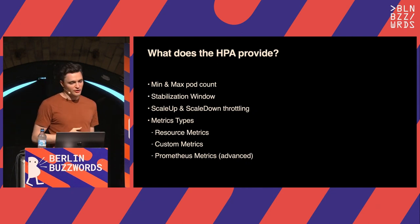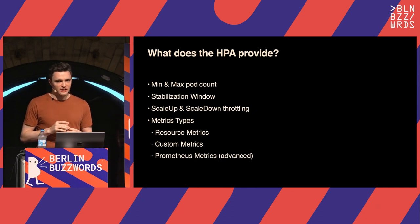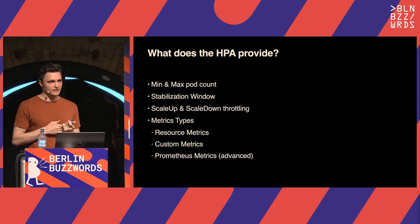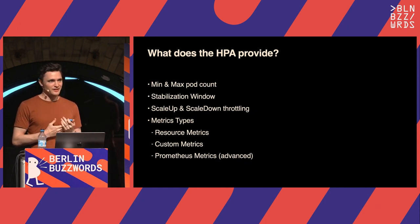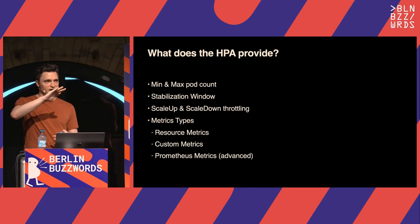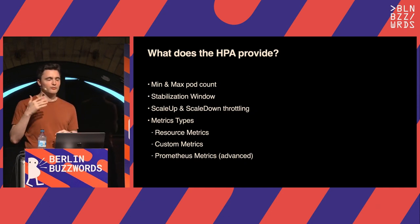We are going to use the HPA — it's really the only option we have. But that's great because the HPA is very popular and provides a good amount of features. You can set a minimum pod count and a maximum pod count. There's also a stabilization window: after making a change, don't do anything for the next X amount of time before recalculating. And you can throttle how many pods you scale up or down at a time to keep things smooth.